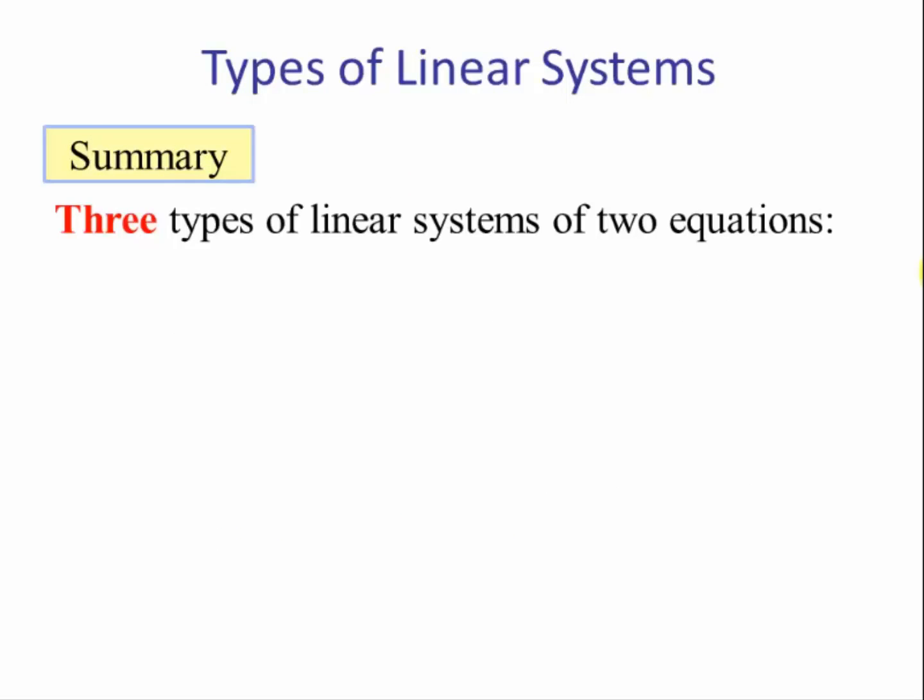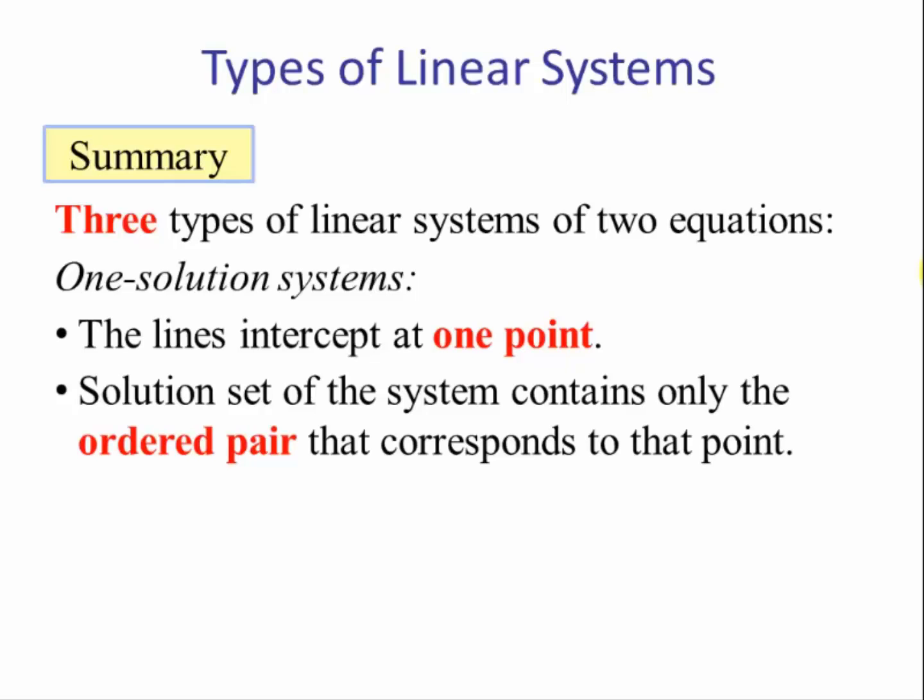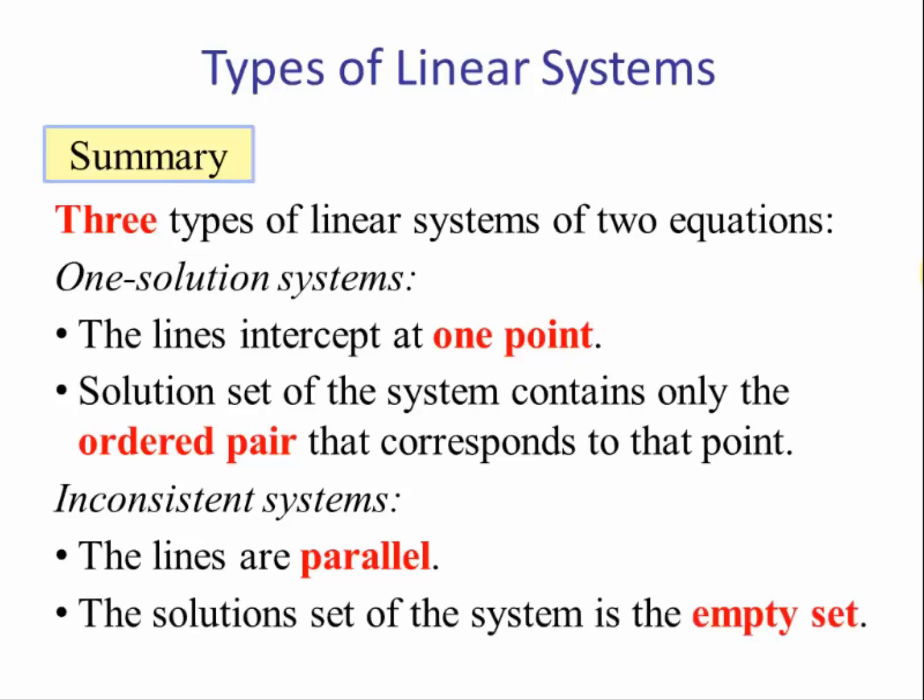Three types of linear systems of two equations: One solution systems - the lines intersect at one point. Solution set of the system contains only the ordered pair that corresponds to that point. Inconsistent systems - the lines are parallel. The solution set of the system is the empty set. There is no solution.